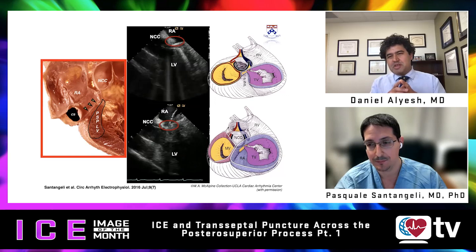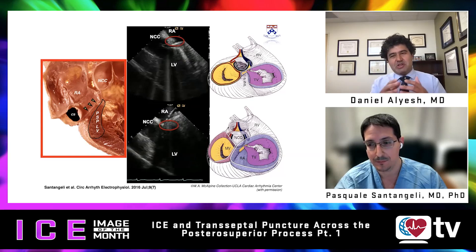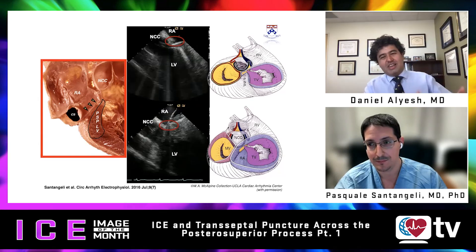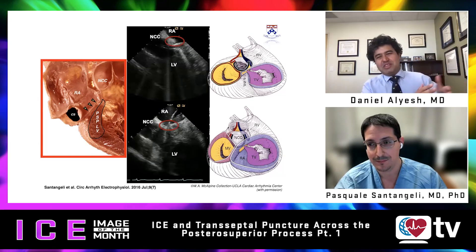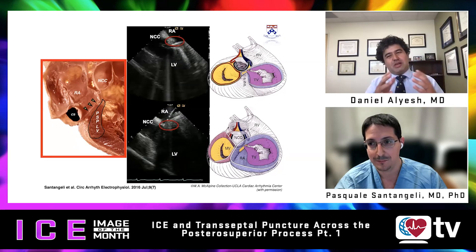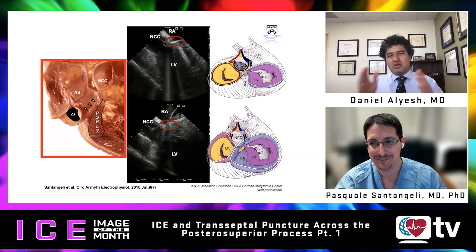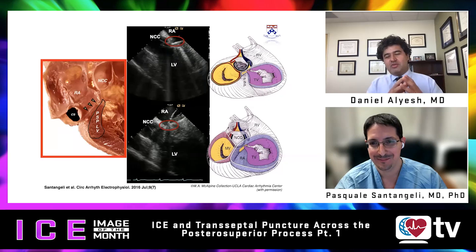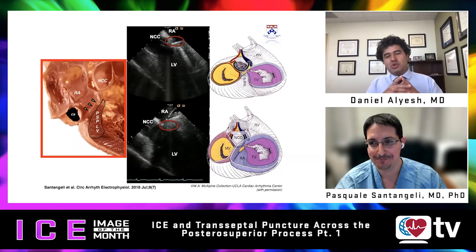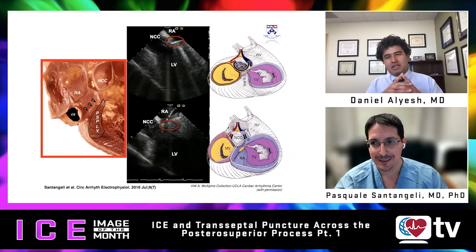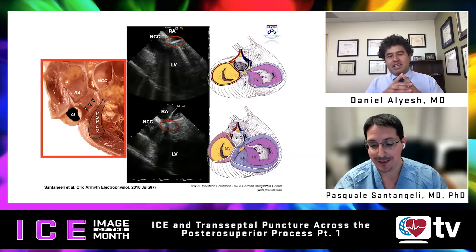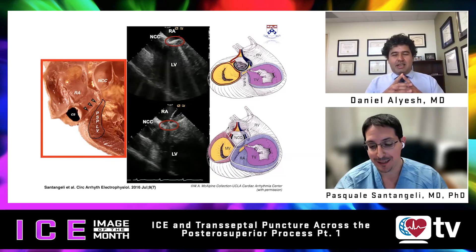The ICE images from Penn are presented with a left-right inversion. Someone who didn't train at Penn might find this unfamiliar — can you explain the reasoning behind flipping the ICE images in this way?